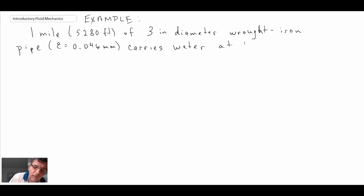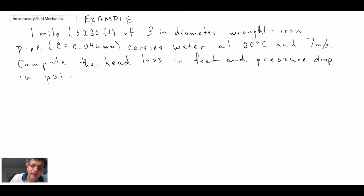We're going to solve another example problem involving the calculation of pressure drop in pipe flow, so I'll begin by writing out the problem statement. We have one mile of pipe that is 3-inch internal diameter wrought iron with a surface roughness epsilon of 0.046 millimeters. Water is flowing at 20 degrees C and 7 meters per second average velocity. We're told to compute the head loss in feet and pressure drop in PSI.